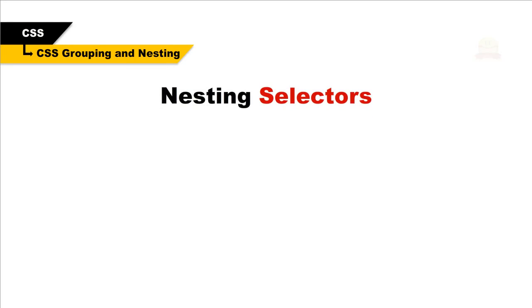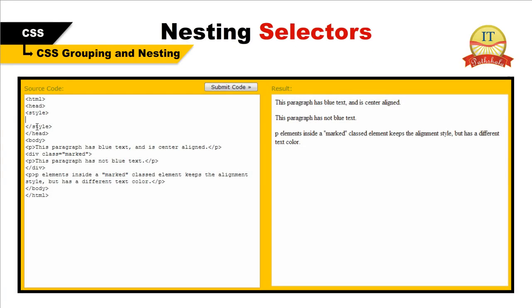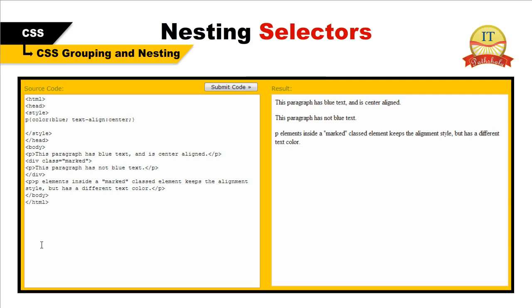Nesting selectors. In CSS, you can apply a style for a selector within a selector. In the example shown, one style is specified for all P elements, one style is specified for all elements with class 'marked', and a third style is specified only for P elements within elements with class 'marked'.